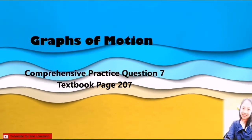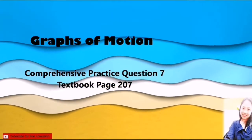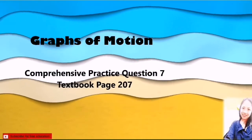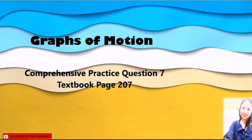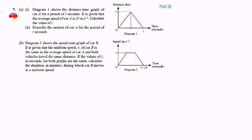Today, the teacher will discuss comprehensive practice question number 7. Diagram 1 shows the distance-time graph of car A for a period of 3 seconds. It is given that the average speed of car A is 25 metres per second. Calculate the value of T.